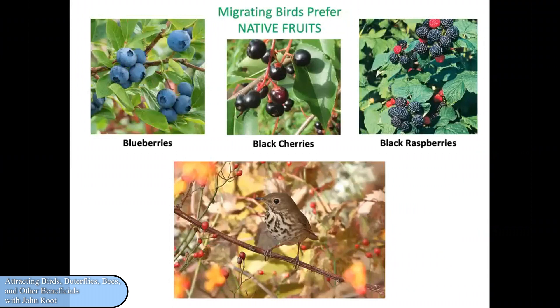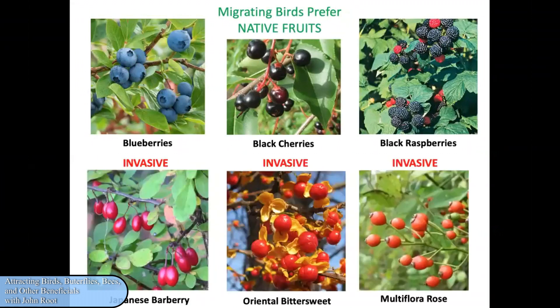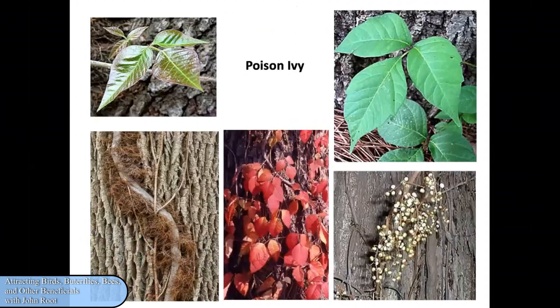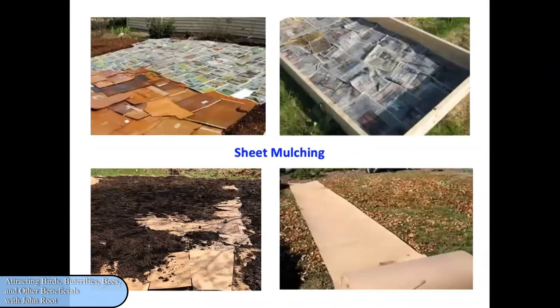Migrating birds prefer native fruits because they're more nutritious — blueberries, black cherries, and black raspberries — but they'll turn up their beaks at Japanese barberry, oriental bittersweet, and multiflora rose, even when those are far more abundant than native fruits in a given area, simply because birds recognize they are less nutritious. Poison ivy is actually a native plant that has white fruits available in the winter for birds to eat. But if you have it on your property and you're concerned about coming in contact with it, you will want to eradicate it.